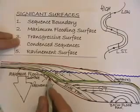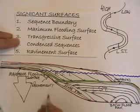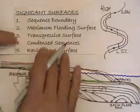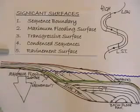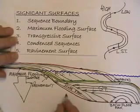So we've got the sequence boundary, the maximum flooding surface, the transgressive surface, the condensed sequences, and the ravinement.